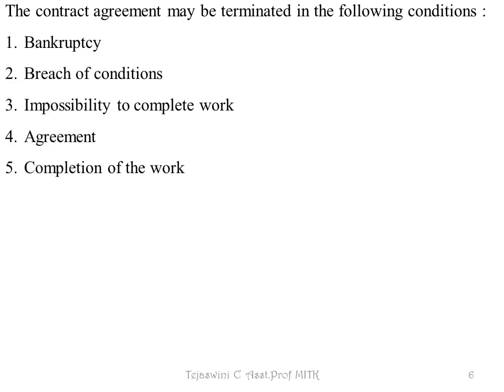Now we will see what is Termination of Contract. The contract agreement may be terminated in the following conditions: First, Bankruptcy. Second, Breach of Conditions. Third, Impossibility to Complete Work. Fourth, Agreement. Fifth, Completion of Work. Any contract will be terminated based on these five conditions.